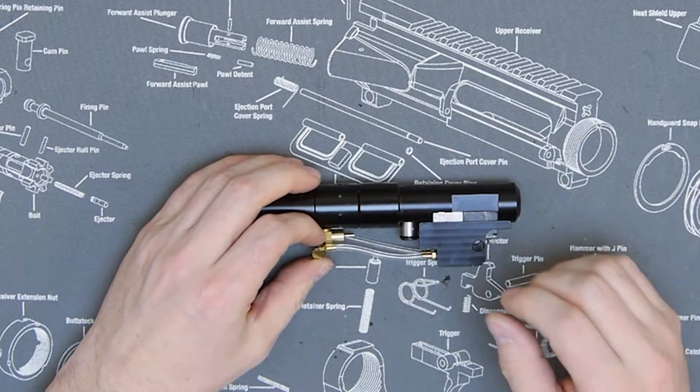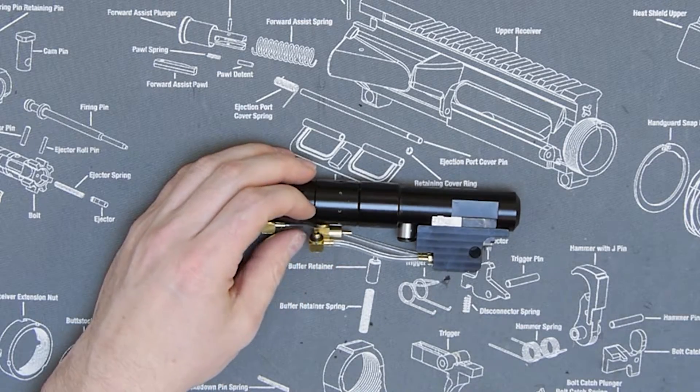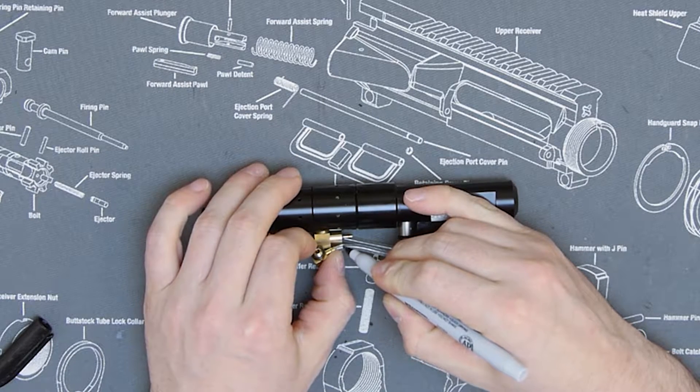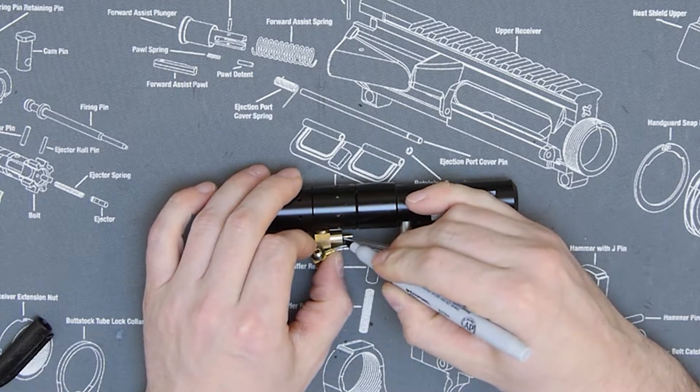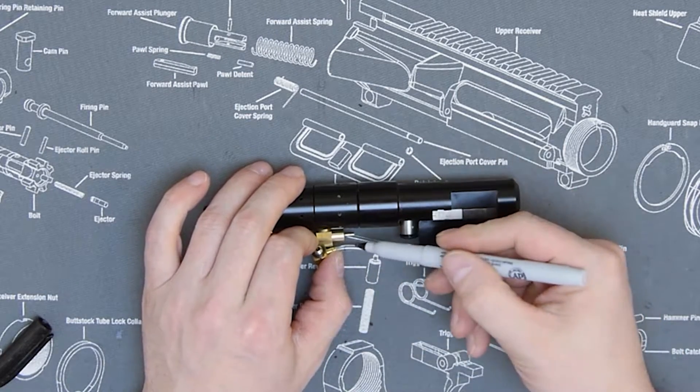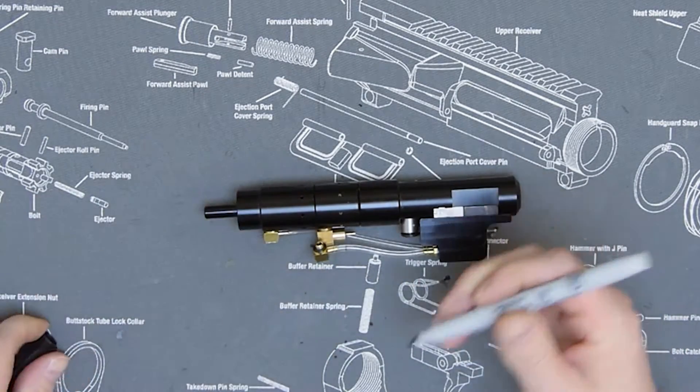Now what we're going to do is trim the line for the barb. I'm just going to take my fine tip marker and mark it on the edge of the line here so my line will just butt right up against the QEV housing.